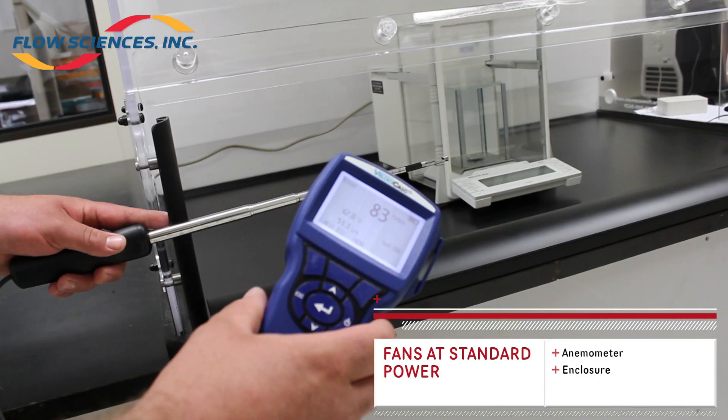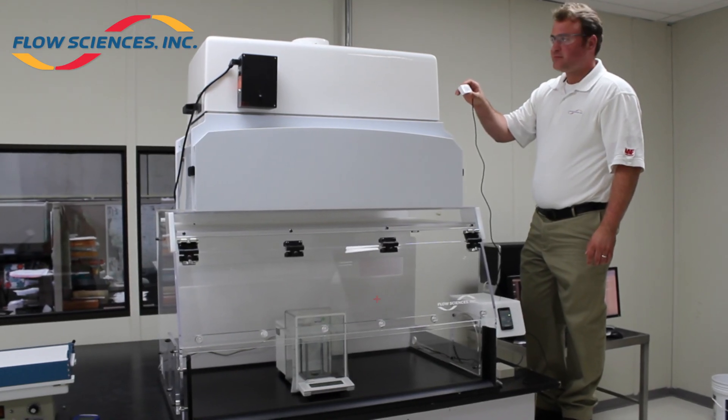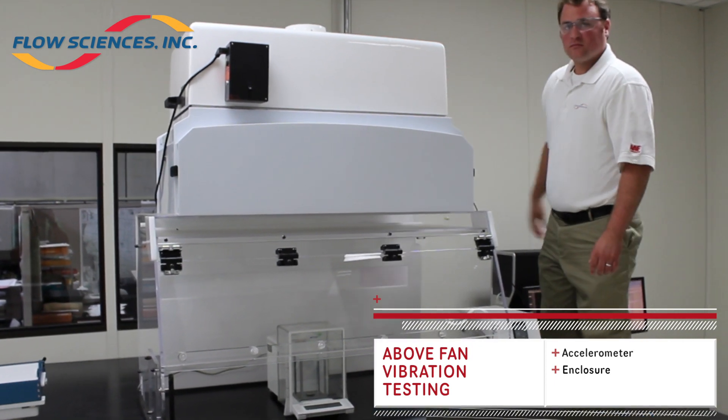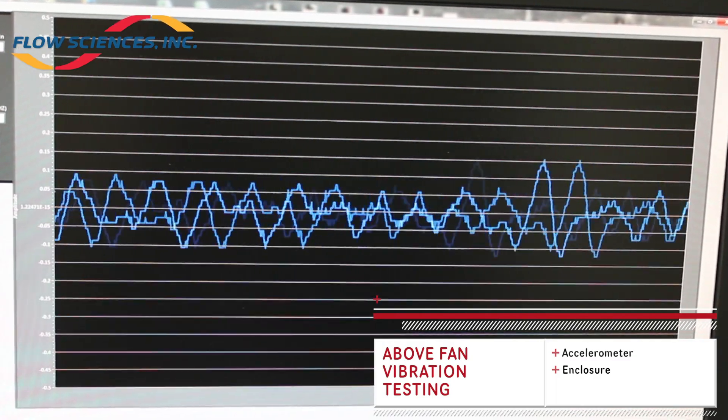Test 3: The fan was set to maintain a standard face velocity. The sensor was placed on top of the fan unit. This was to determine what vibrations are created by and present at the fan unit on top of the enclosure under normal operating conditions.